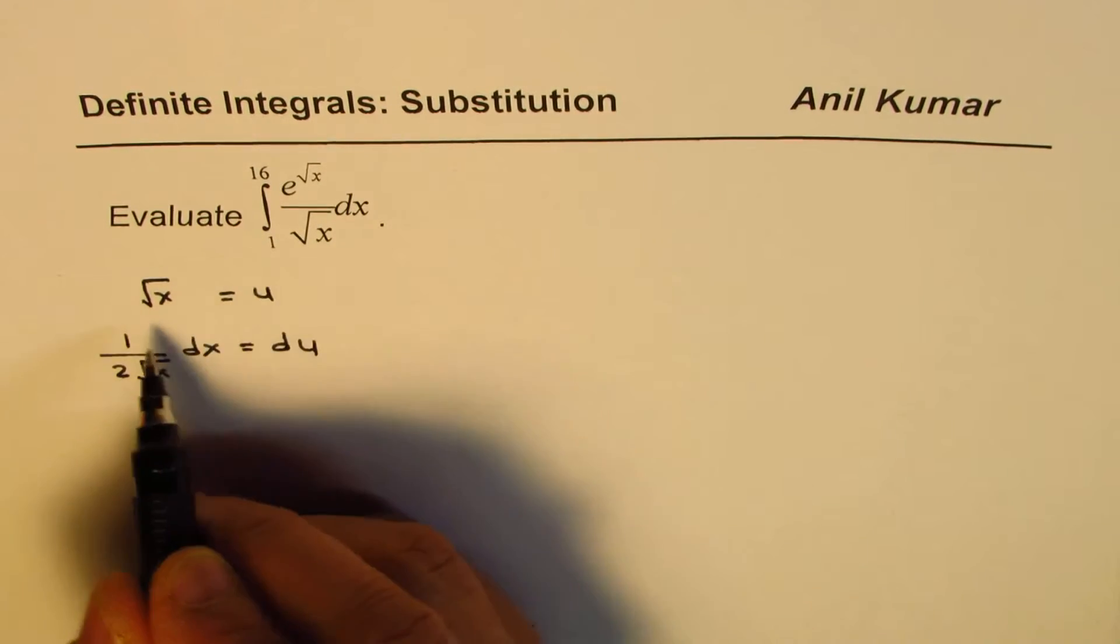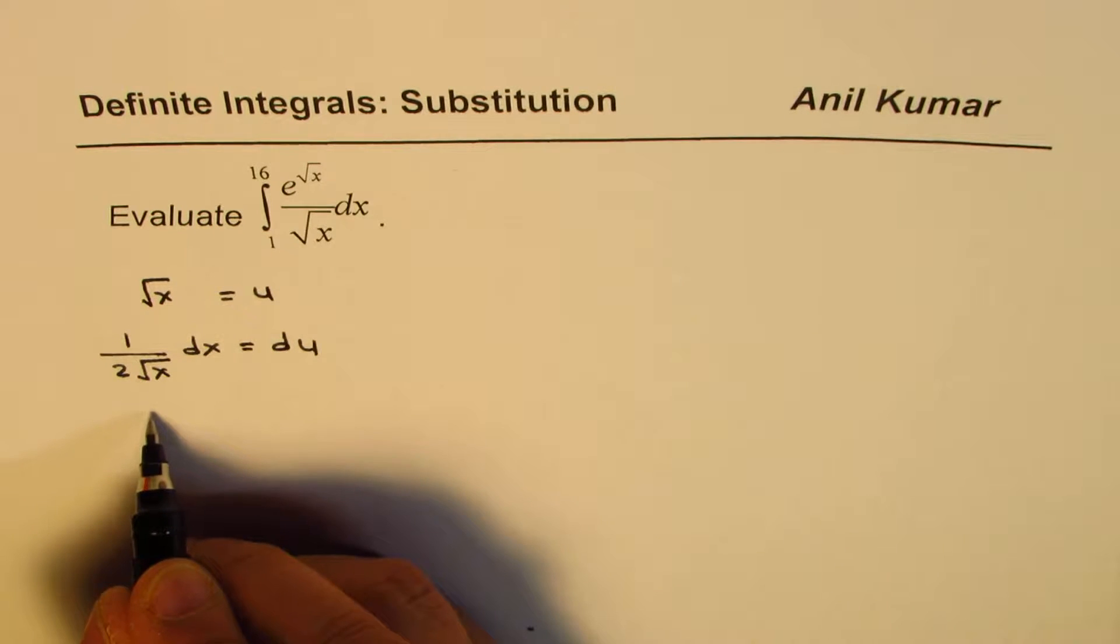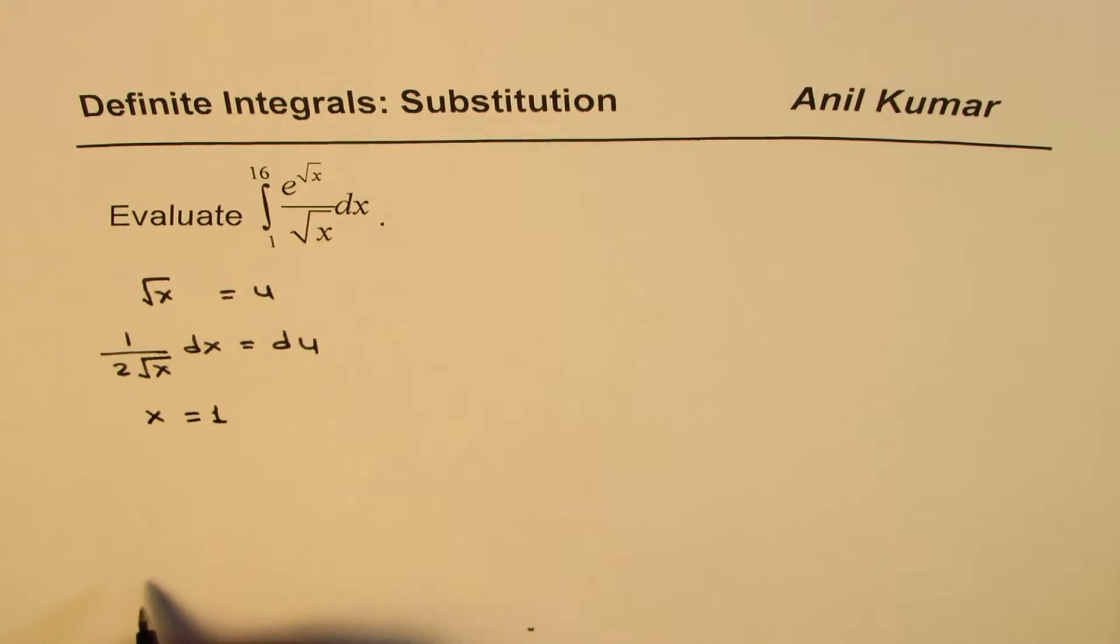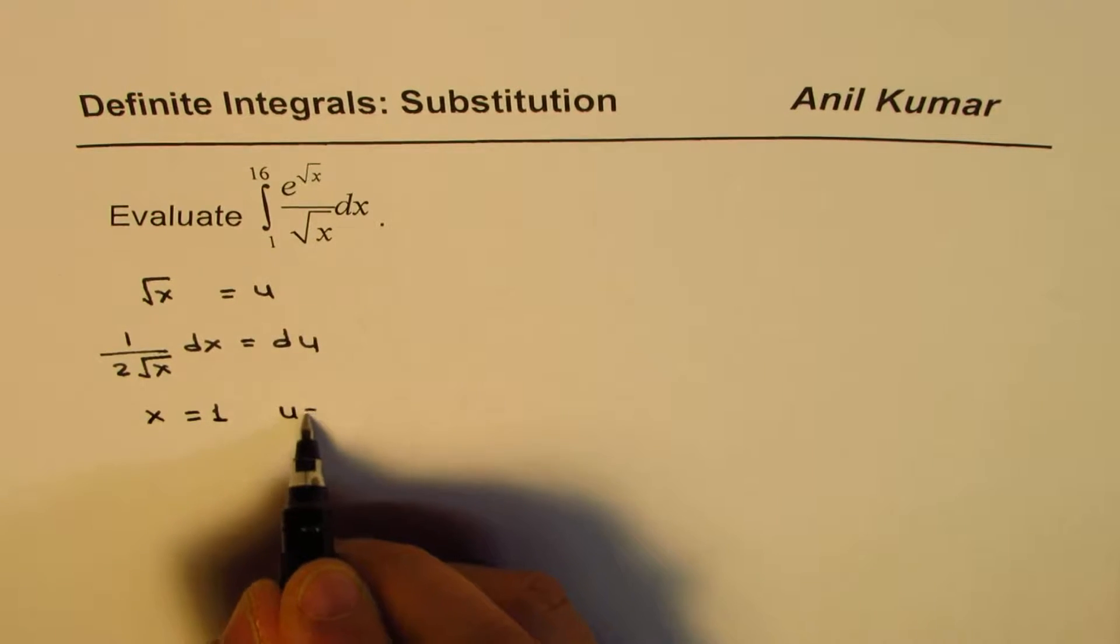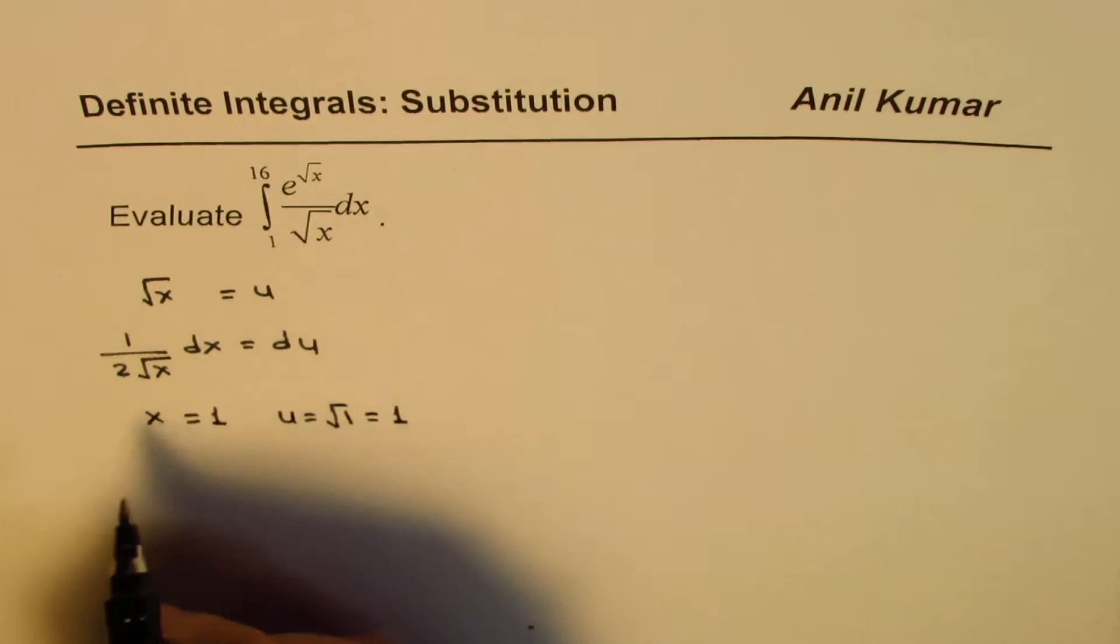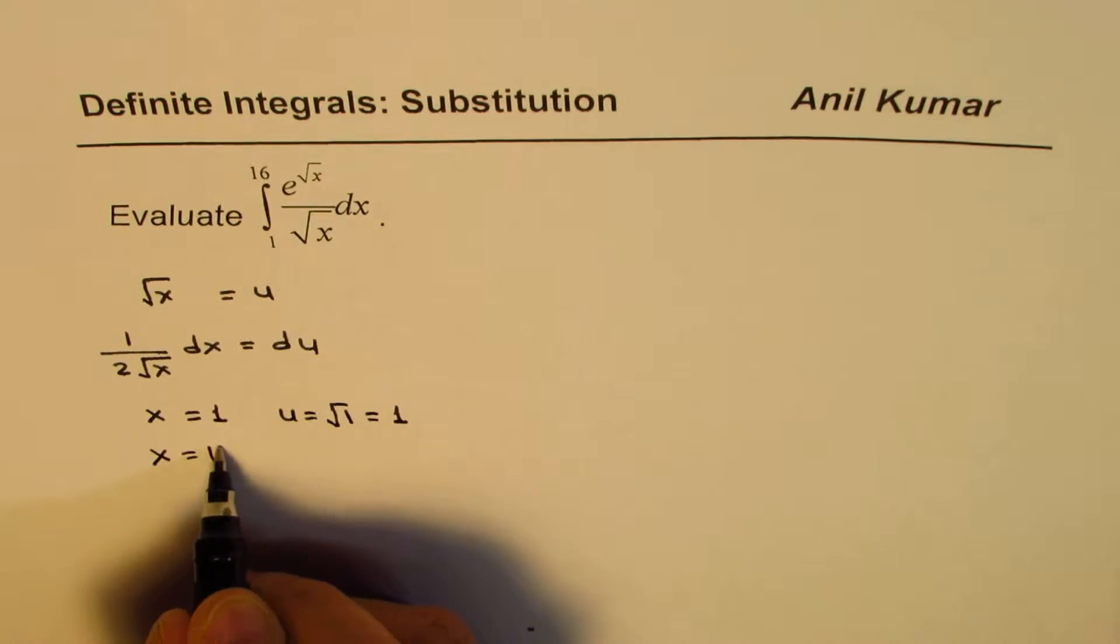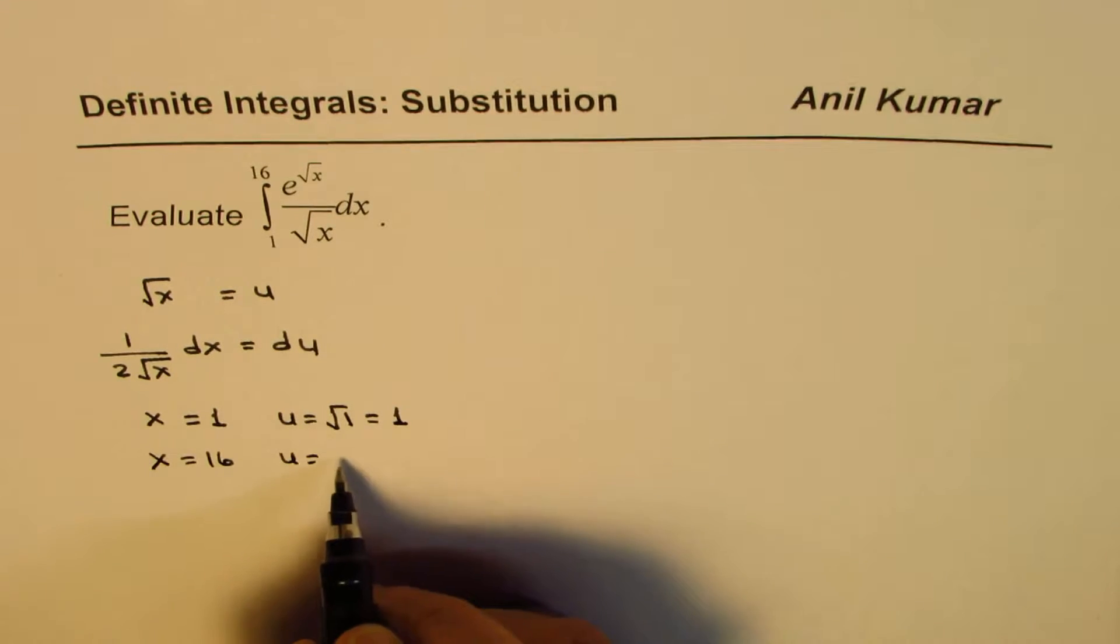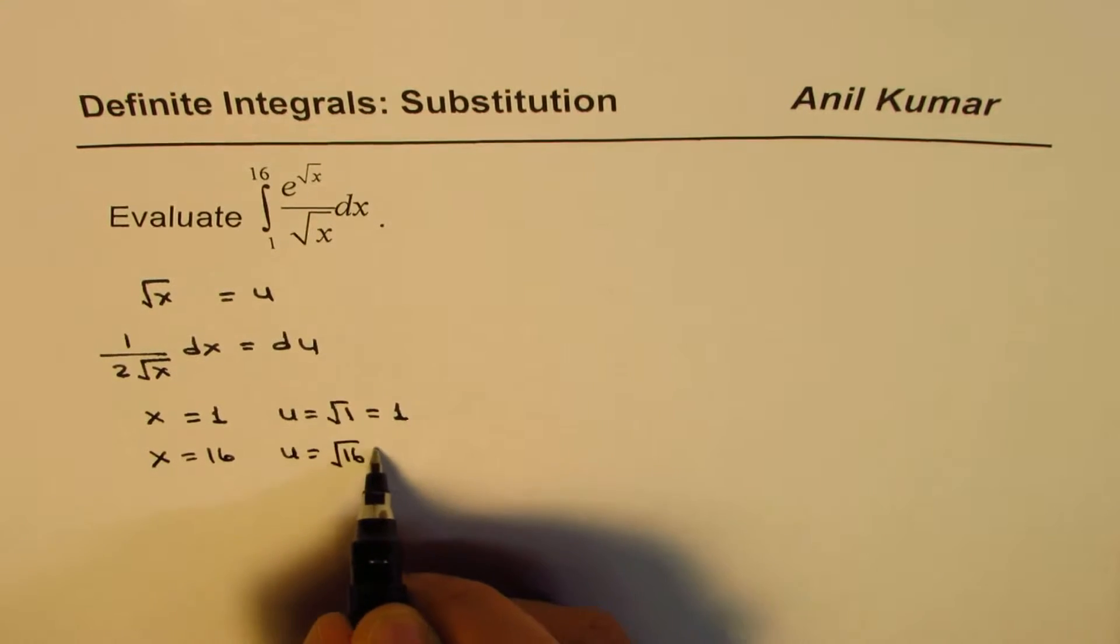Let us work it up. If x equals 1, in that case what will be u? u is going to be square root of 1 which is 1. And if x equals 16, then what will be the value of u? u will be square root of 16 and that is 4.